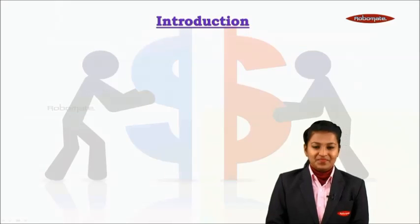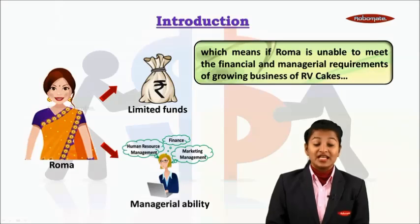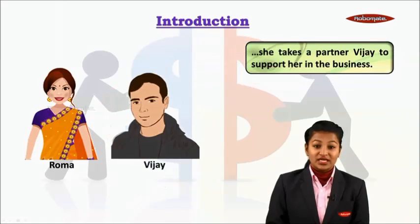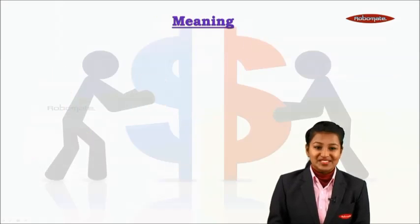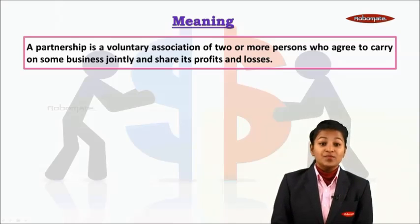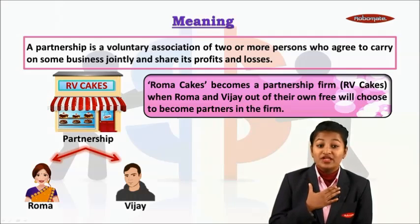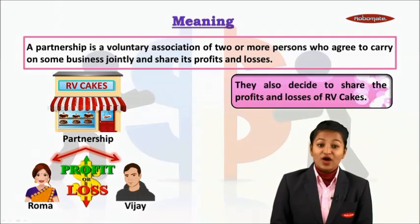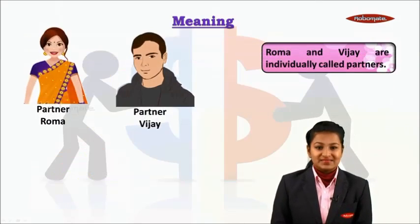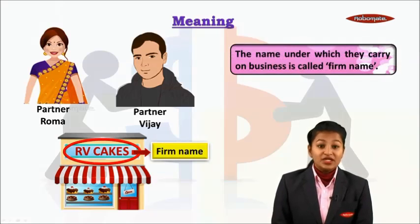The partnership form of business is an extension of sole proprietorship. For example, if Roma is unable to meet the financial and managerial requirements of her growing business RV Cakes, she takes a partner, Vijay, to support her. A partnership is therefore a voluntary association of two or more persons who agree to carry on some business jointly and share its profits and losses. Roma and Vijay, out of their own free will, choose to become partners. They are individually called partners, collectively known as a firm, and the name under which they carry out business — RV Cakes — is called the firm name.